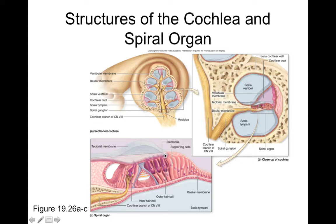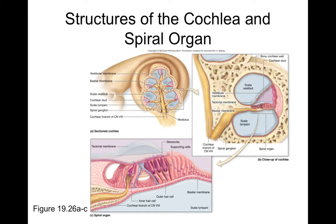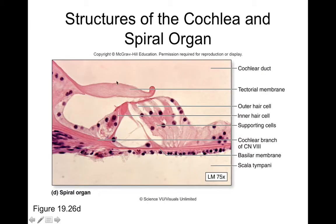High-frequency sounds are picked up by parts of the cochlea more proximal to the auditory ossicles, so they undergo more mechanical vibration and are more often damaged before lower-frequency sounds. With age-related hearing loss, individuals typically lose their ability to sense high-frequency vibrations first, because those areas are closer to the auditory ossicles and more exposed to damage over a lifetime or from loud noises, whereas lower-frequency sound perception is more likely to remain intact as it's farther from the ossicles.